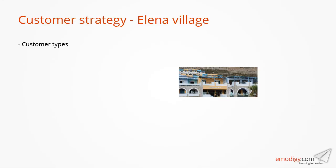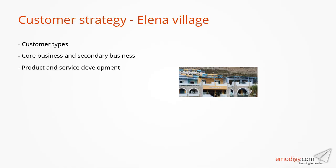Customer types: we know which customer types are present and potential. Core business and secondary business: we know that core business is renting out apartments and secondary can be transportation, tours, food, etc. Product service development: the owners and employees have to continuously discuss which products and services to keep, what to refine and how to surprise customers with new opportunities. Segmentation: the company can make decisions on how to prioritize customers in different segments. Great customer experiences: employees should get involved in finding out and deciding upon what a great customer experience is, leaning on surveys from the travel agency and asking customers what is most important.